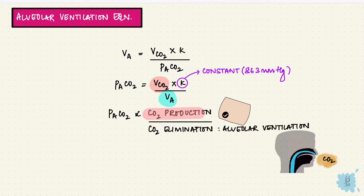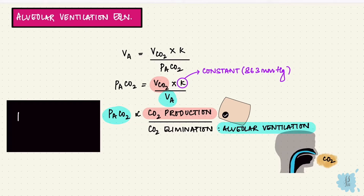If the rate of carbon dioxide produced is constant, then alveolar carbon dioxide depends on the alveolar ventilation rate, and this relationship is inverse. So when alveolar ventilation increases, alveolar carbon dioxide drops. And if there's low alveolar ventilation, there's higher alveolar carbon dioxide.